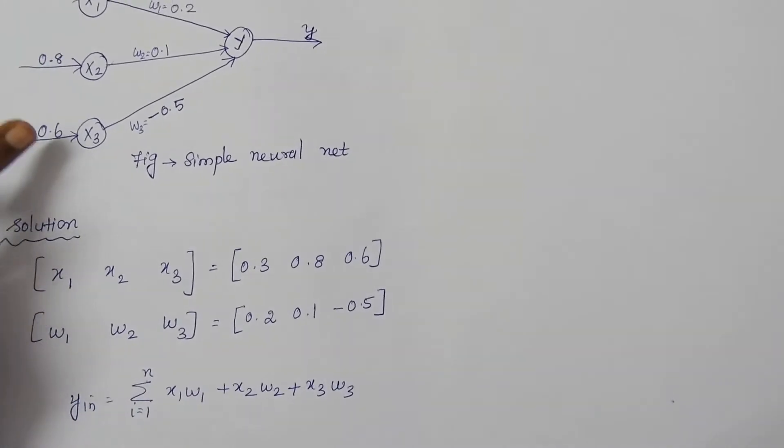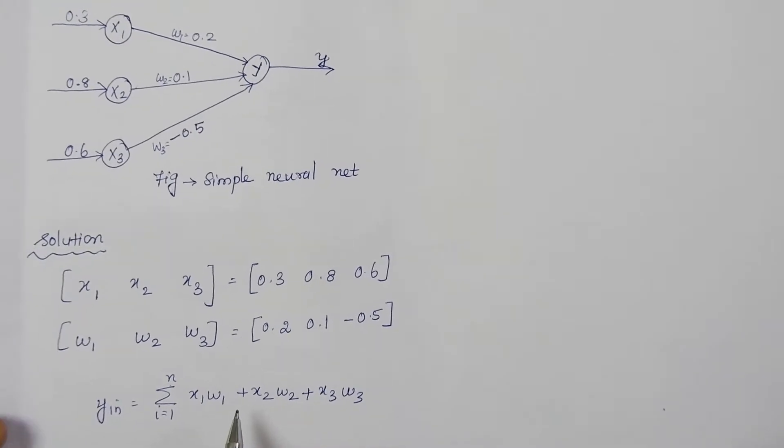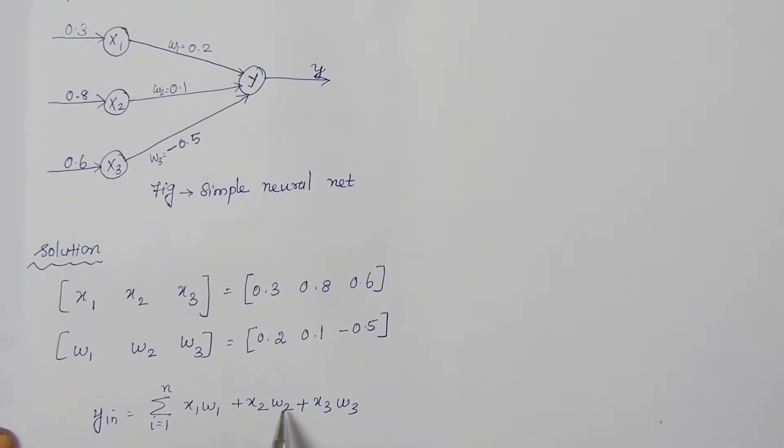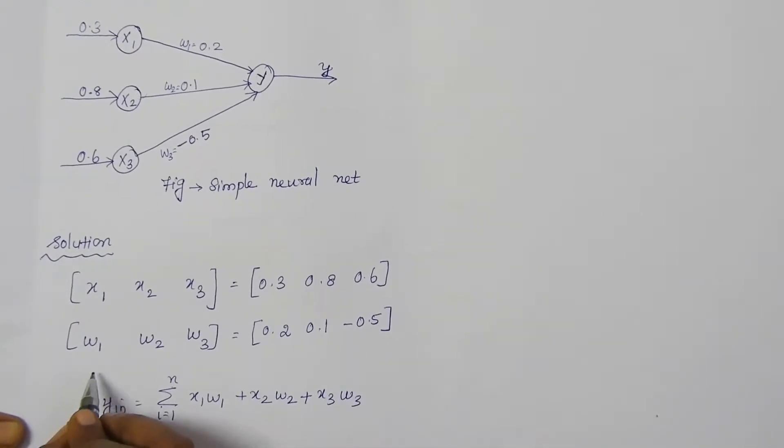Since we have three inputs and three weights, we use the formula x1 w1 plus x2 w2 plus x3 w3.